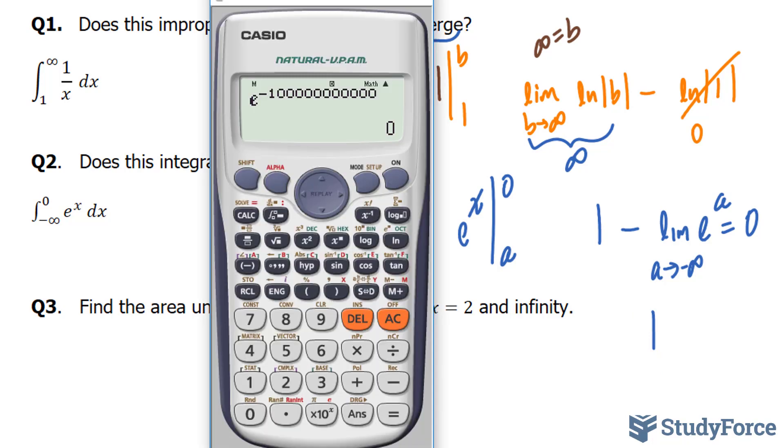Now, in case you don't believe me, open up your calculator, put e to the power of a very small negative number, and you end up with 0.